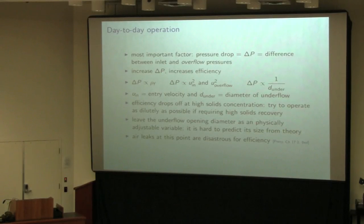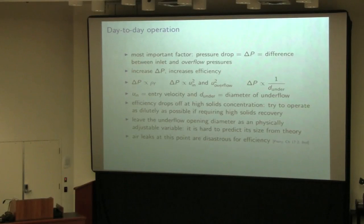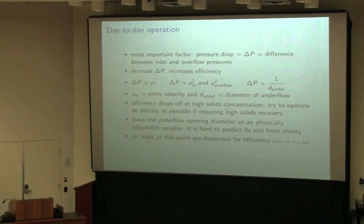Two important pieces of advice: leave the underflow diameter as a variable you can adjust day-to-day on the cyclone, as that's one of the easiest and most effective variables to adjust. And if you have any air leaking in at that underflow point, that will drop the efficiency right down.